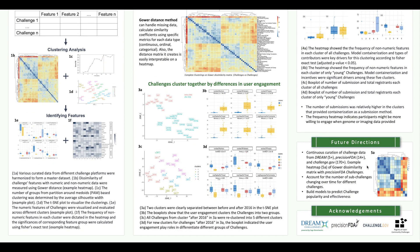With all that said, we are still continuously curating DREAM challenges. For example, we are working to add another layer of sub-challenge data to account for how the number of submissions changes over time for different trends. In addition, more data from other platforms will be integrated into our analysis. Figure 4a shows the Gower similarity matrix of 14 Precision FDA challenges, and we could already see one outstanding cluster which we will further explore. Once we acquire enough data and are comfortable with the selected features, we could build predictive models for effective and popular challenges.